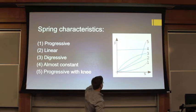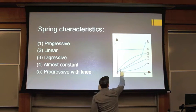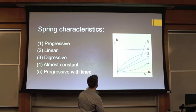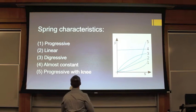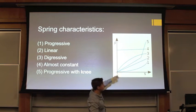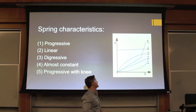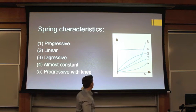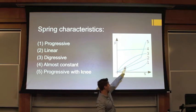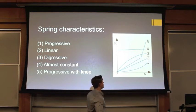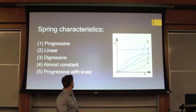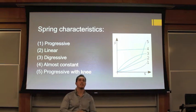The third line is a parabolic one — it's a degressive line. And the fourth one is like constant. And the fifth one that goes straight and then goes up immediately is called the progressive with the knee line.